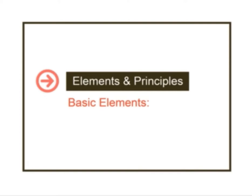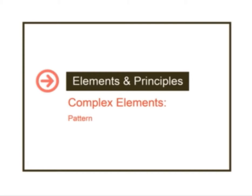The basic elements — there are four of them — are the ones from which all other complex elements are constructed. Those elements are line, shape, surface, and color. The complex elements are made up of combinations of those simple elements. The first of those complex elements is pattern, the second is motion, the third is space, and the fourth is light. All four are made up by manipulating those four basic elements, so you need to understand the basic ones before you can deal with the complex ones.